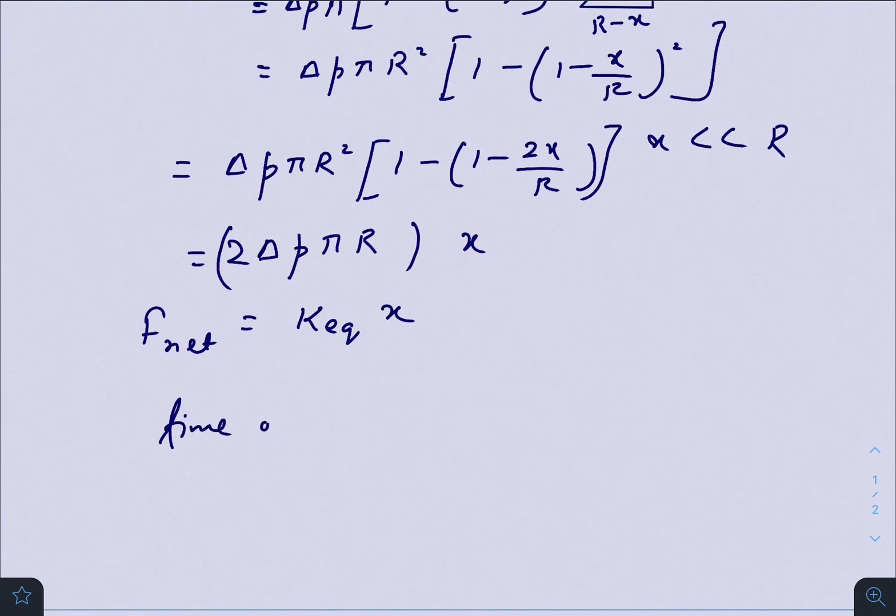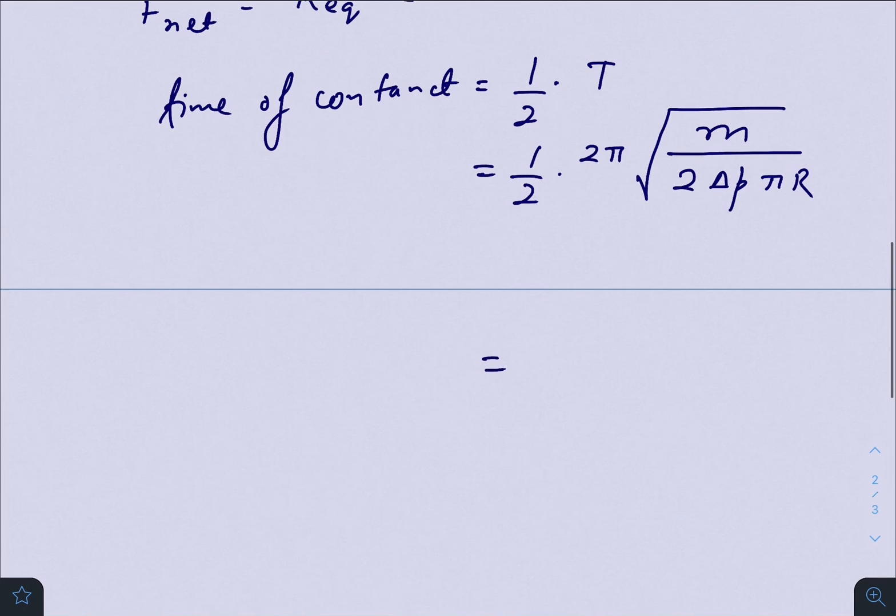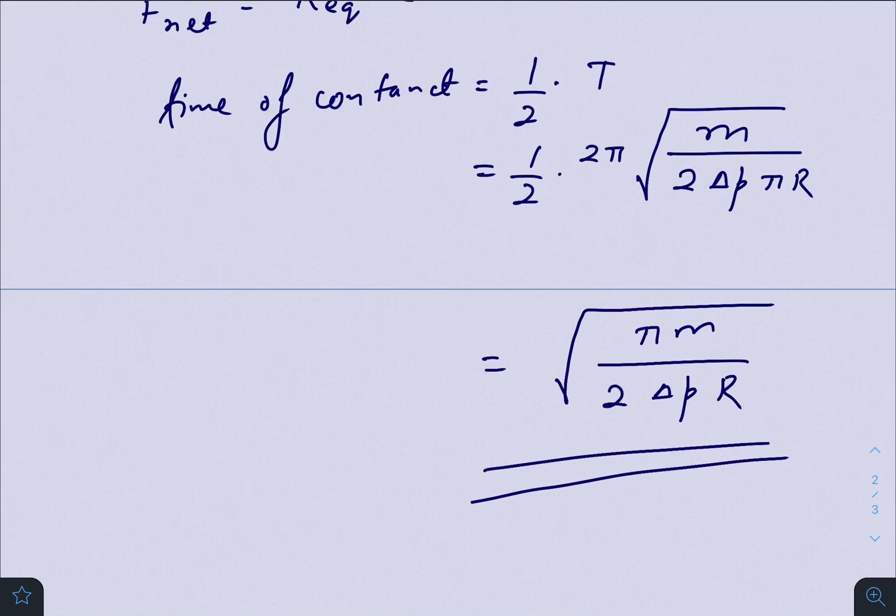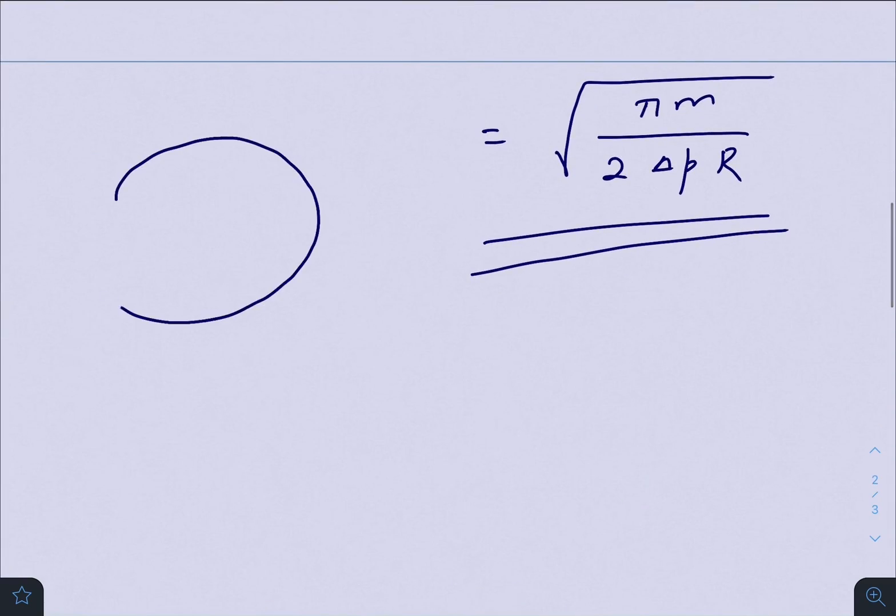So time of contact will be half of the total time period, and we know that the formula for time period is 2π√(m/k_equivalent). And the final answer will be √(πm/(2ΔpR)). So this will be our answer. I hope all of you have found this video helpful, thank you.